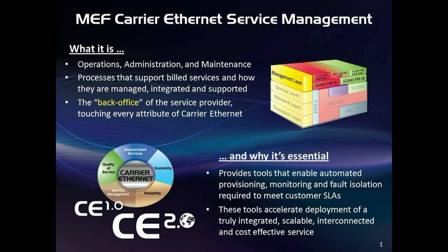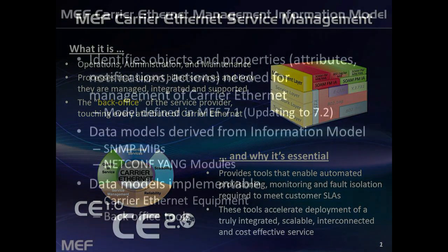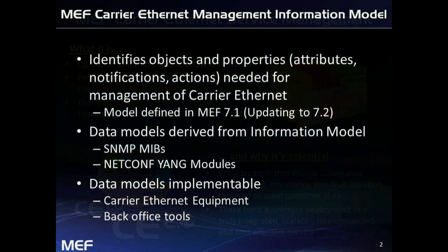One of the core aspects behind the architecture of service management within the MEF is the Carrier Ethernet information model. It identifies the objects and properties, including attributes, notifications, and actions needed for management of Carrier Ethernet. The management information model is defined within the MEF 7.1 specification and is currently being updated to MEF 7.2 to add additional service attributes.